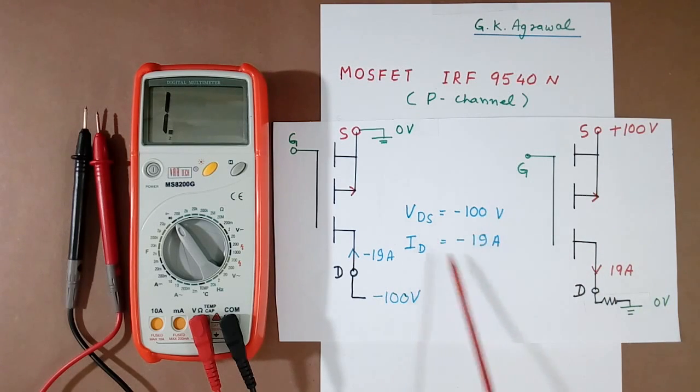Similarly, current also they write Id is equal to minus 19A. This is minus 19A current. If you reverse the direction, then minus will become plus. We write minus 19A flowing here or 19A flowing this side. Both are same, there is no difference. But we can understand in a better way if you use the circuit.